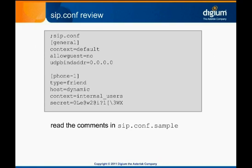Toward the bottom of the sample file are examples of user and peer account sections. We will add a peer configuration for our SIP trunk to our sip.conf file below our user phone configuration. Before we do that, though, we need to add an outbound registration line for our trunk.